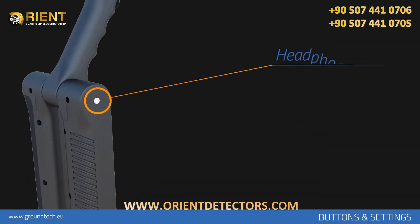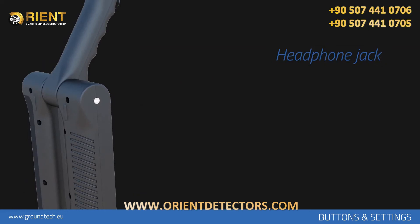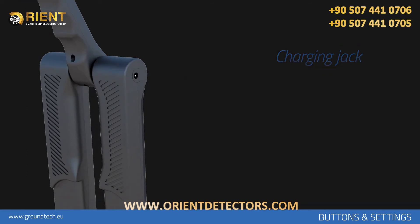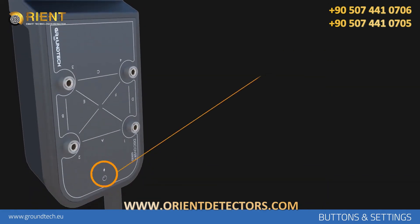The start button is located under the handle of the device for manual measurements. On the right side of your device is the headphone jack, and on the left is the charging jack — only charge your device with the included charging adapter. The battery charging lamp on the main body will flash red while charging, and turn to a stationary red light when fully charged. You can see the battery level on the screen.